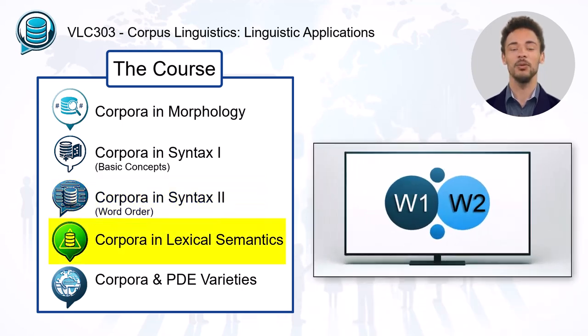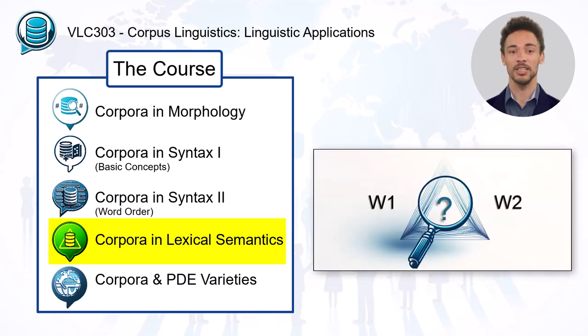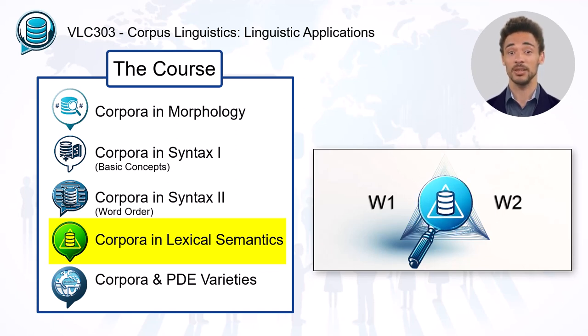Unit 4 examines the field of lexical semantics. After an introduction of the main theoretical issues of word semantics, it provides material for corpus analyses that may help solving the main problems of this field.